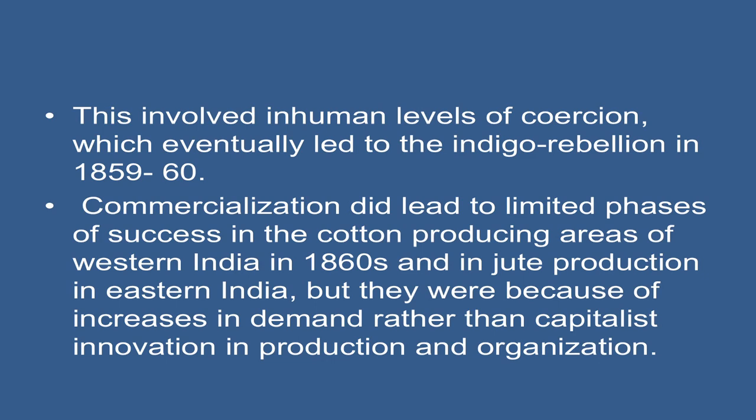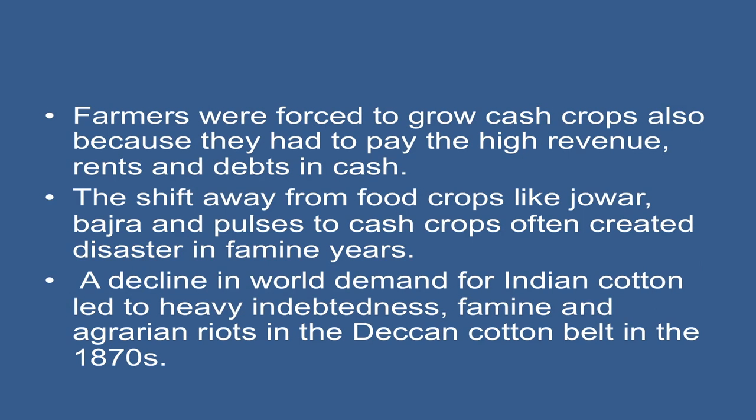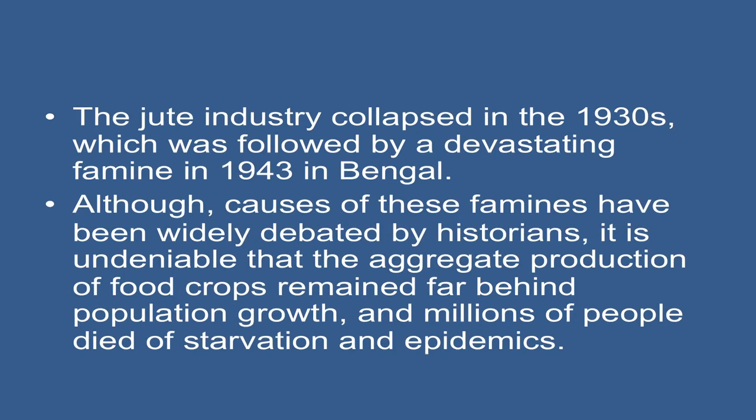Commercialization did lead to limited phases of success in the cotton-producing areas of western India in the 1860s and in jute production in eastern India, but these were because of increases in demand rather than capitalist innovations in production and organization. Farmers were forced to grow cash crops also because they had to pay high revenue rents and debts in cash. The shift away from food crops like jowar, bajra, and pulses to cash crops often created disaster in famine years. A decline in world demand for Indian cotton led to heavy indebtedness, famine, and agrarian unrest in the Deccan cotton belt in the 1870s. The jute industry collapsed in the 1930s, which was followed by a devastating famine in 1943 in Bengal.